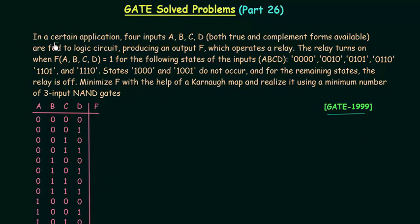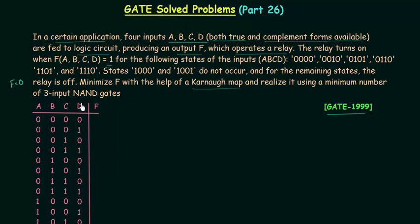In a certain application, four inputs A, B, C and D — both true and complemented forms available — are fed to a logic circuit producing an output F which operates a relay. The relay turns on when F is equal to 1 for the following states of the inputs. States 1,0,0,0 and 1,0,0,1 do not occur, meaning they are don't cares, and for the remaining states the relay is off, so F is equal to 0. Minimize F with the help of a Karnaugh map and realize it using a minimum number of 3-input NAND gates.